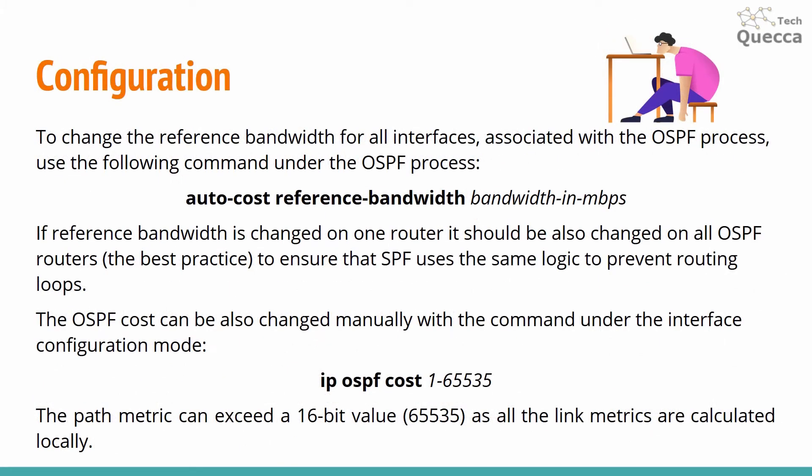To change the reference bandwidth for all interfaces associated with the OSPF process, use the following command under the OSPF process: auto-cost reference-bandwidth, then specify the bandwidth value in megabits per second. If the reference bandwidth is changed on one router, it should also be changed on all OSPF routers to ensure consistent logic and prevent routing loops.